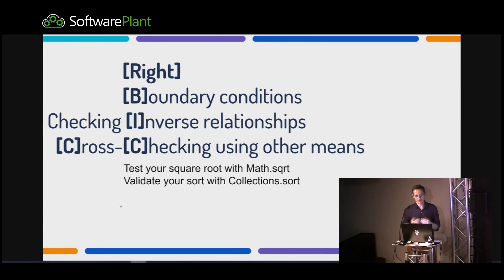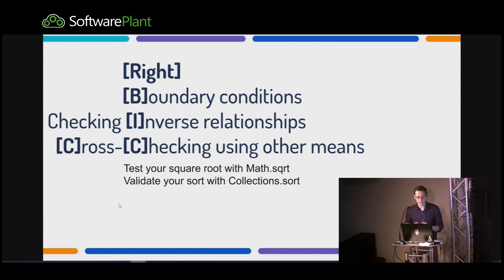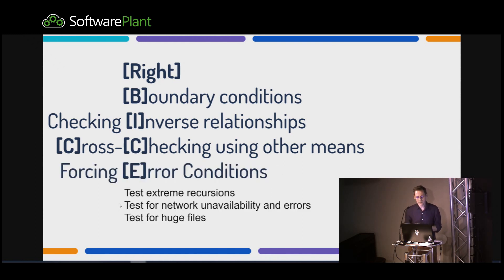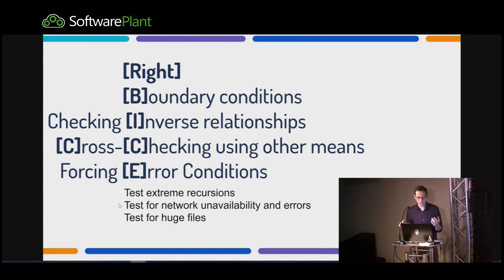C for Cross-checking using other means. For example, if I'm writing a super fast sorting algorithm, I can use a normal algorithm to verify it. If I'm writing a mathematical library, I can use standard Java mathematical functions to check correctness. E for forcing Error conditions: test extreme cases in recursive functions, mock network connections and check what happens if you disconnect mid-operation, or give a file reader the biggest file possible to verify assumptions about file size limits.